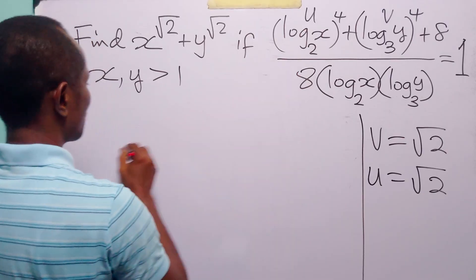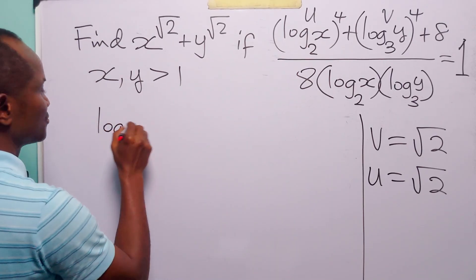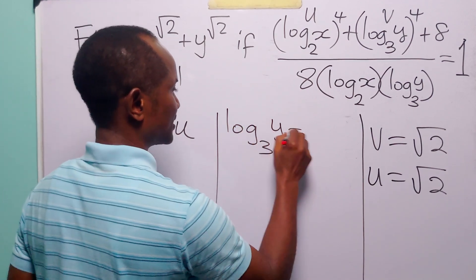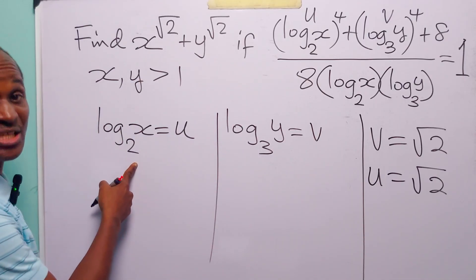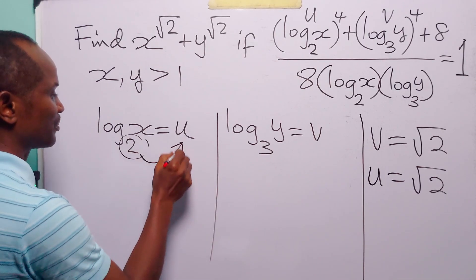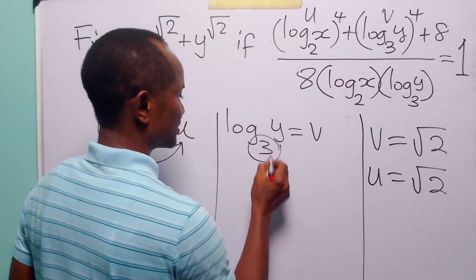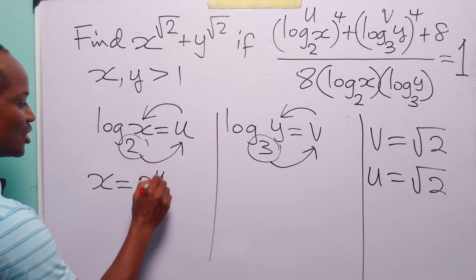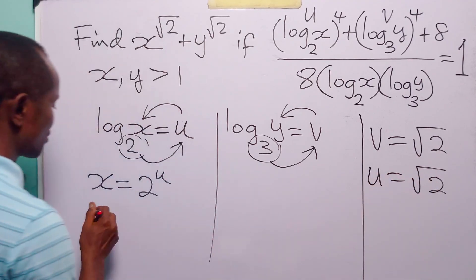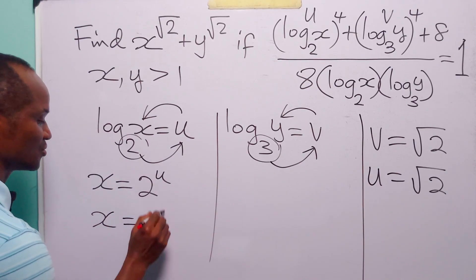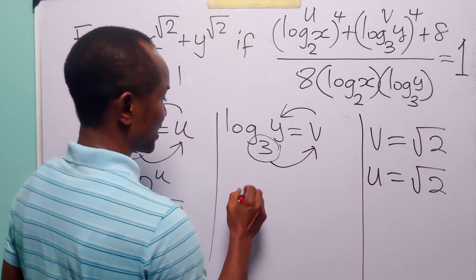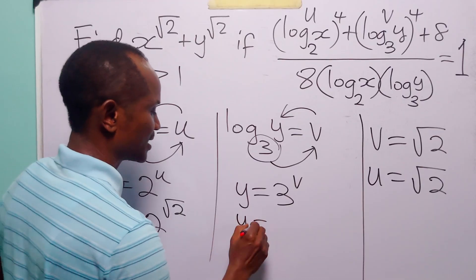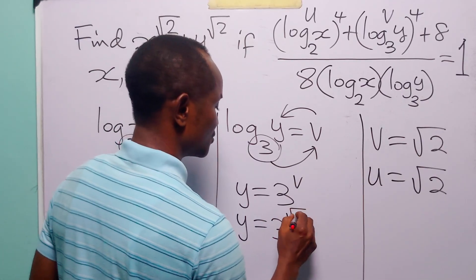Coming back to our substitution: log base 2 of x equals u, and log base 3 of y equals v. This means 2 to the power u equals x, and 3 to the power v equals y. So x equals 2 to the power root 2, and y equals 3 to the power root 2.